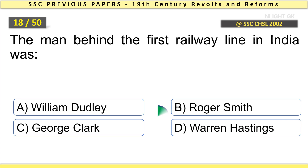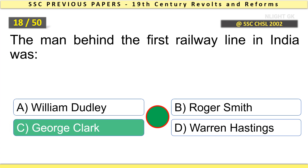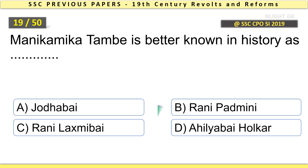The man behind the first railway line in India was George Clark.